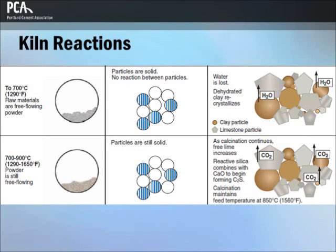In the first stage, water is driven from the powder at 700 degrees Celsius or 1290 degrees Fahrenheit. Next, the carbon dioxide in the limestone is driven off in a process called calcination, at 700 to 900 degrees Celsius or 1290 to 1650 degrees Fahrenheit. In this stage, the first calcium silicates are nucleating to form C2S, or belite.